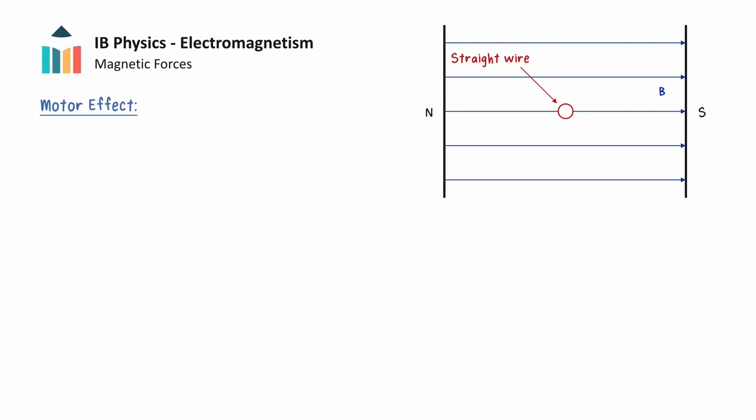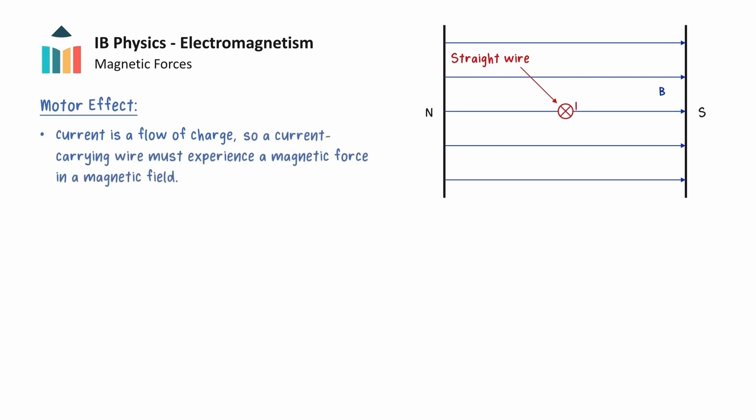Let's now consider a straight wire placed in a uniform magnetic field. Recall that a current is a flow of electric charge. Since a moving charge experiences a magnetic force while placed in the magnetic field, a current-carrying wire placed in the magnetic field must also experience a magnetic force, due to the forces acting on the moving charges in the wire. This also means that when there is no current in the wire, there is no force acting on the wire as there are no moving charges.